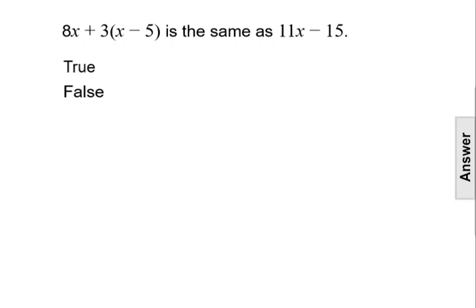So looking at the first expression, we have 8x plus 3 times the quantity x minus 5. We can first simplify that by distributing the 3 to the two terms on the inside of the parentheses.